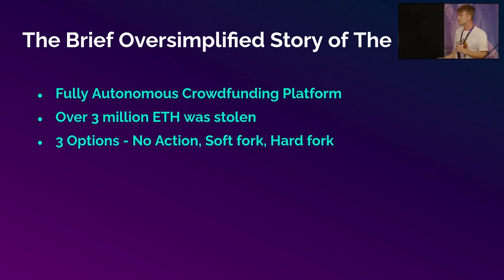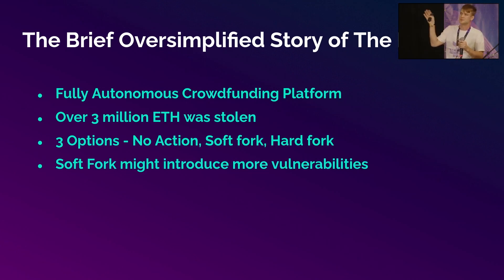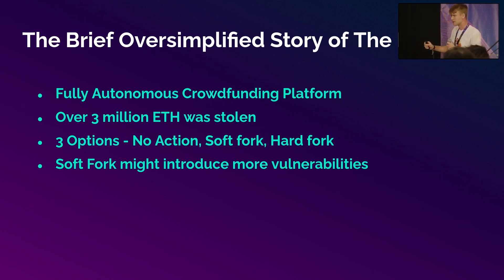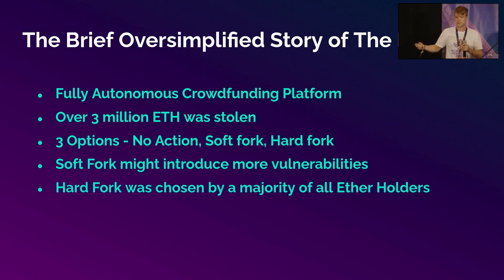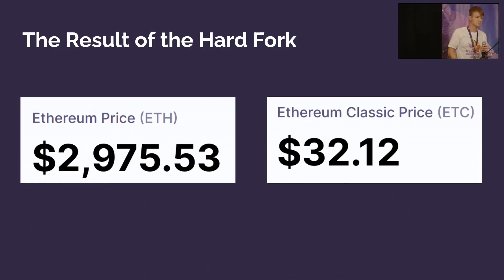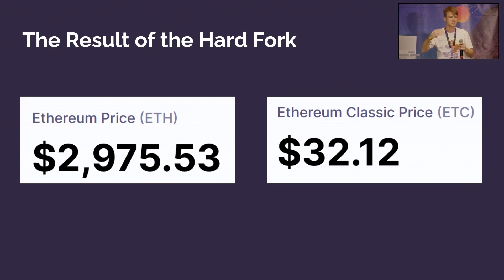There was another proposal, a soft fork. What the soft fork did was that the investors would still have their 3 million ETH missing, but the hacker was prevented from using it. But this introduced some more vulnerabilities and nuances, and more discussion was needed. In this case, the hard fork was chosen. The hard fork basically reverted history and gave the investors back the money. The hard fork was chosen by the majority of ETH holders. Looking at the token price, we see that the price of ETH is more than the price of ETH Classic because the protocol is being used more.